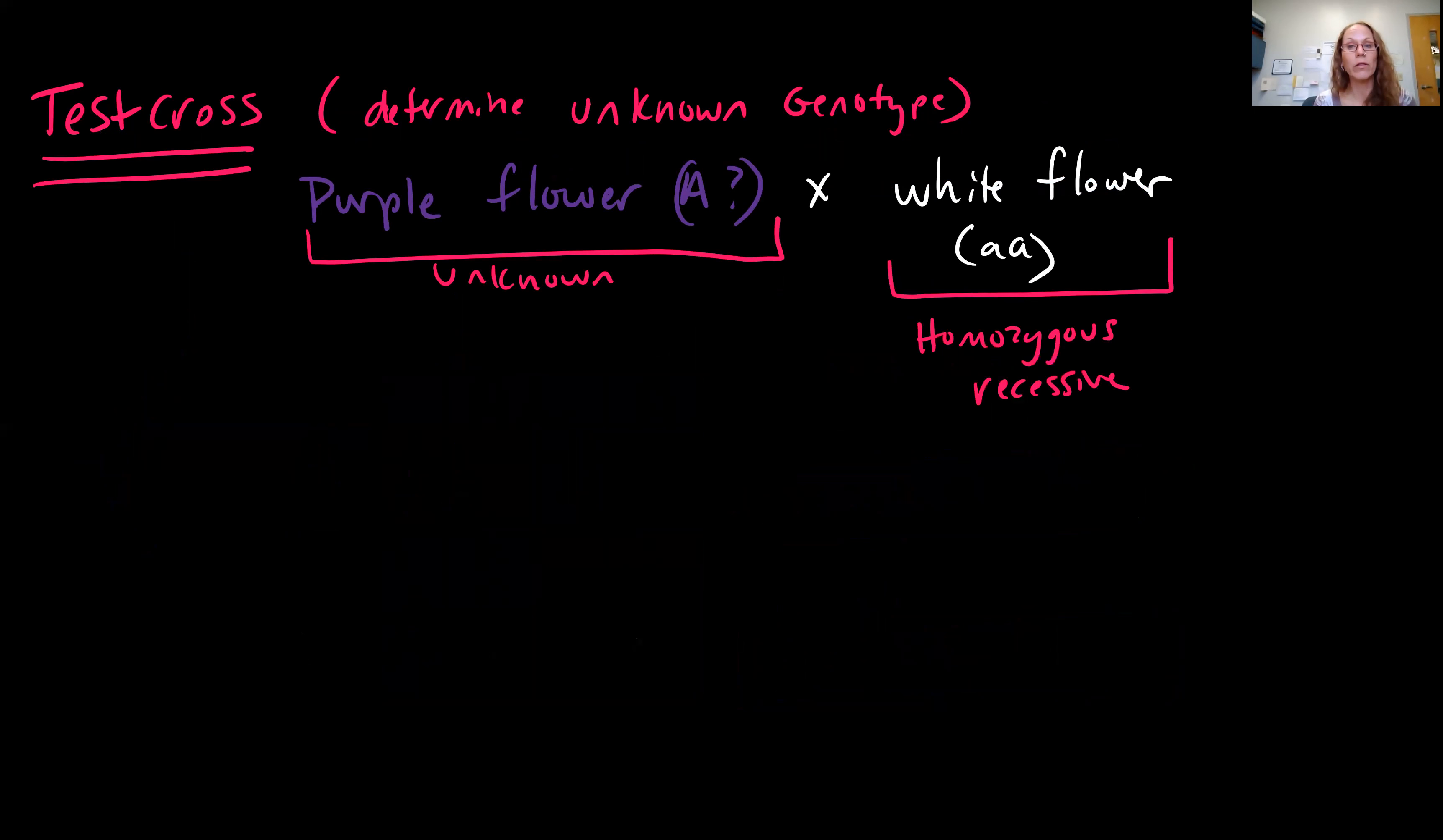Now, what happens if you don't know the genotype of one of your individuals? So, if you have the dominant form, there's no way to know automatically if it's homozygous dominant or heterozygous. So, you can do what's called a test cross in order to figure out an unknown genotype.